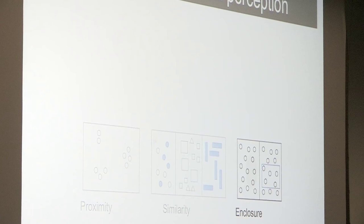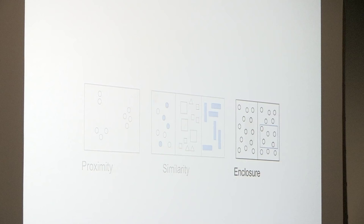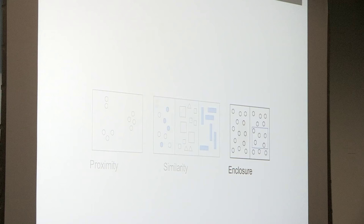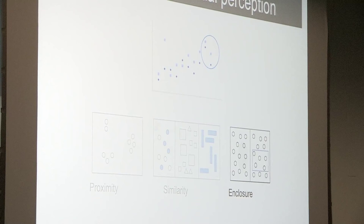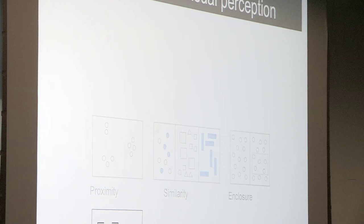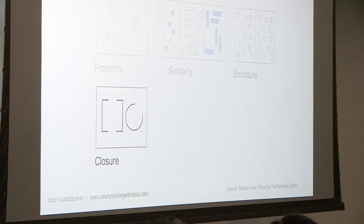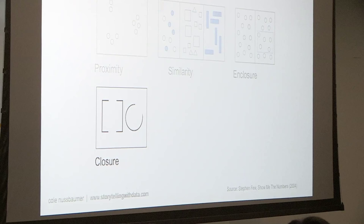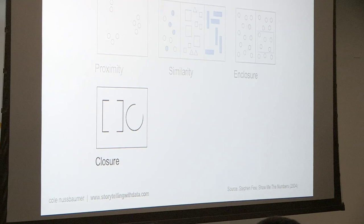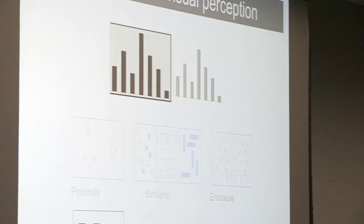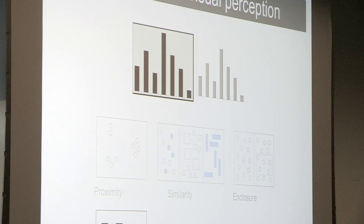The third principle is enclosure: we tend to think of objects that are physically enclosed together as belonging to a group. It doesn't take a very strong enclosure — light background shading is often enough. We can leverage enclosure to draw our audience's attention to a certain part of our visual. The next principle is closure: people like things to be simple and to fit constructs already in our head. Most people faced with certain visual stimuli see a square with the center panel missing, or a circle with a piece missing. This allows us to question heavy borders and dark background shading — we can strip those elements away, and our graph still appears as a whole, with the data standing out more.